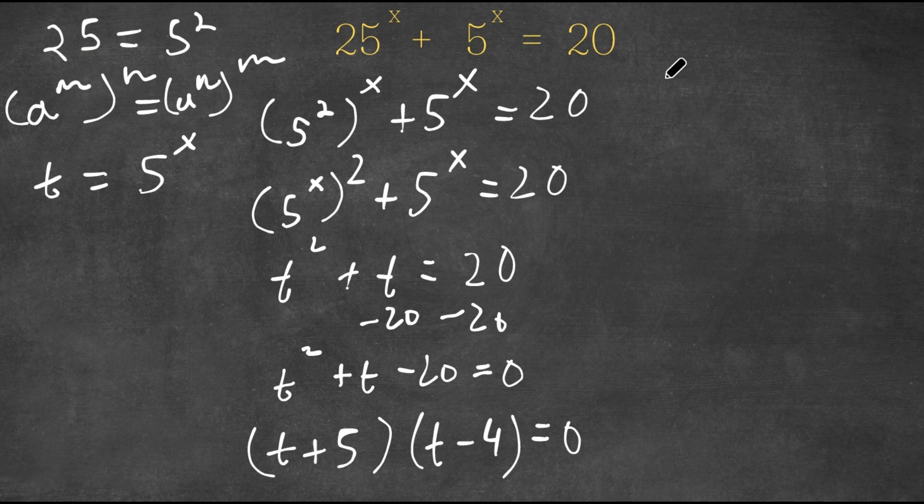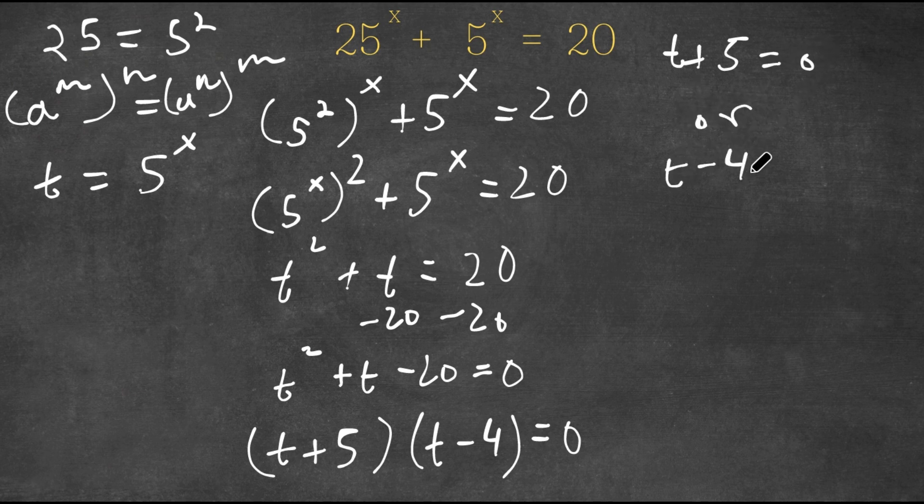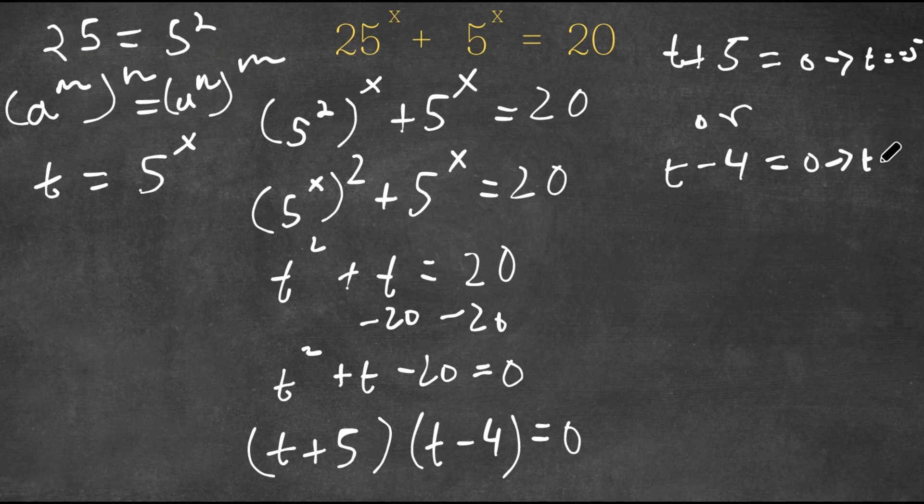And this gives me two equations. I have t plus 5 is equal to 0, and I have t minus 4 is equal to 0. For t plus 5, this means that t is equal to negative 5. And for t minus 4, this means that t is equal to positive 4.